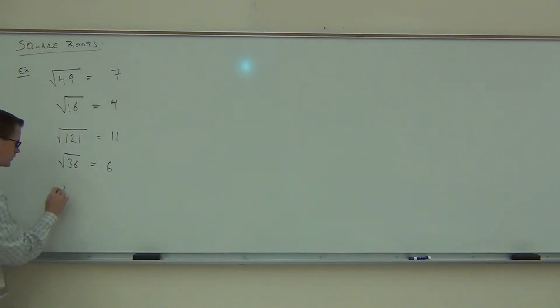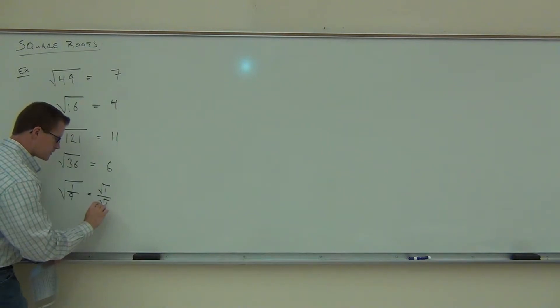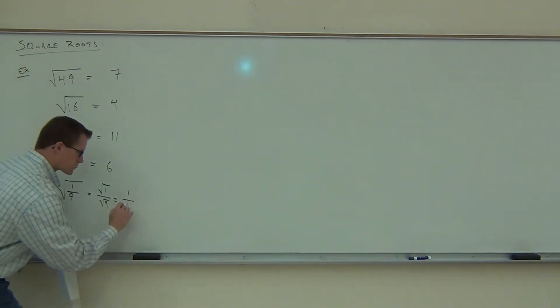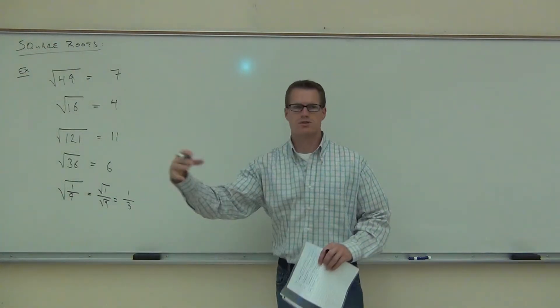How about the square root of 1 ninth? Is that okay to take the square root of a fraction? Yeah, 1 third. Why? Because if you put the second power on both of them, it makes 1 ninth. You can do this. This is legal. And you are right. You are going to get the square root of 1 is how much? 1. And the square root of 9 is 3. So that's how we do get the 1 third. We take the square root of both the numerator and the denominator, that works out for us.